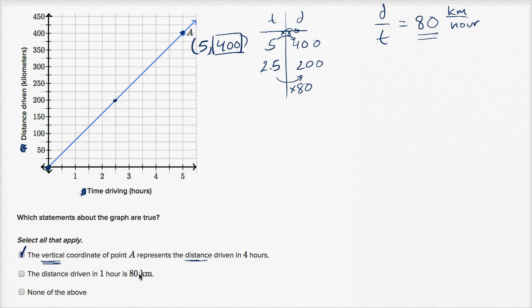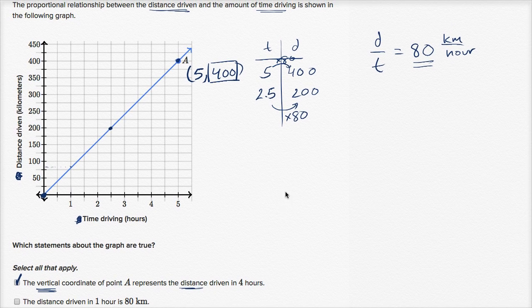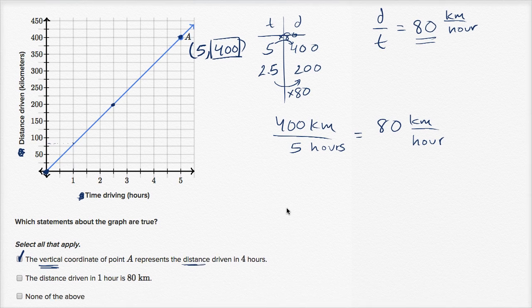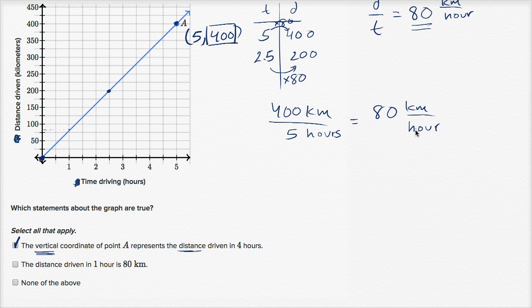The next statement: the distance driven in one hour is 80 kilometers. When you eyeball it off the graph after one hour, it looks like a little more than 75 — so 80 seems reasonable. But we see it even more clearly from our calculation: 400 kilometers over five hours gives a rate of 80 kilometers per hour. Since this is a proportional relationship — goes through the origin and is a line — the distance traveled in one hour is going to be 80 kilometers. I like that choice as well.